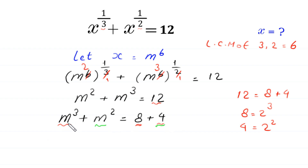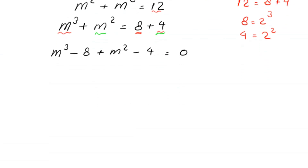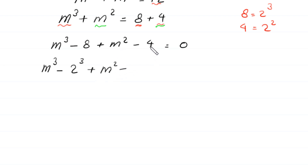Then this equation will become m cubed minus 8 plus m squared minus 4 is equal to 0. Here, m cubed minus 8 can be written as m cubed minus 2 cubed, and m squared minus 4 can be written as m squared minus 2 squared, all equal to 0.